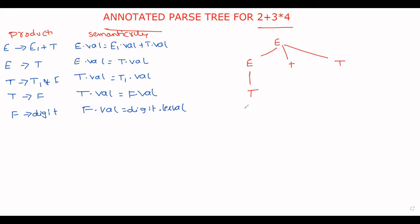Based on that I am evaluating the expression. T tends to F. F tends to digit dot lex value. Now expand this T. T star F, so to get this one T star F. Again F.